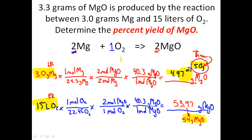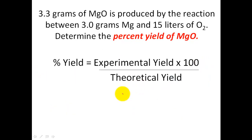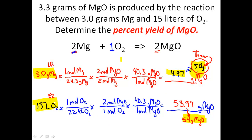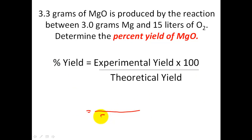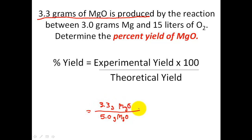Now we substitute our theoretical yield of MgO into the percent yield equation. My theoretical yield, based on the stoichiometry problem, was 5.0 grams of MgO. My problem tells me that in the lab, 3.3 grams of MgO was produced — that is my experimental yield. Dividing 3.3 by 5.0 and multiplying by 100, I end up with a 66% yield.